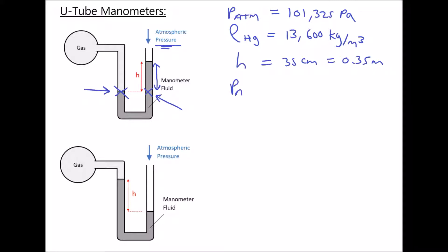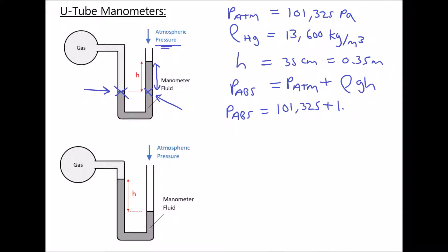For P absolute, we would need to do atmospheric pressure plus the hydrostatic pressure caused by the column of mercury. We said that hydrostatic pressure was density times gravity times height. Therefore the absolute pressure of our gas is 101,325 plus 13,600 times 9.81 times 0.35, giving us an absolute pressure equal to 148,021 pascals, or we can call that 148 kilopascals.